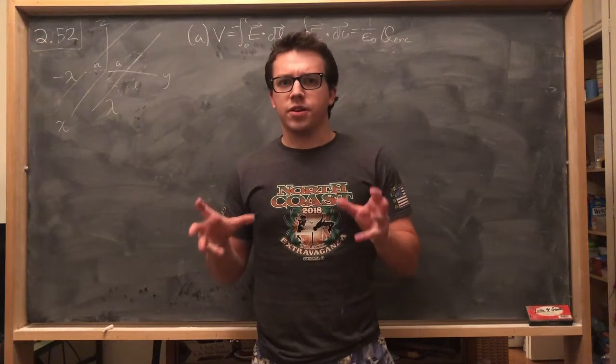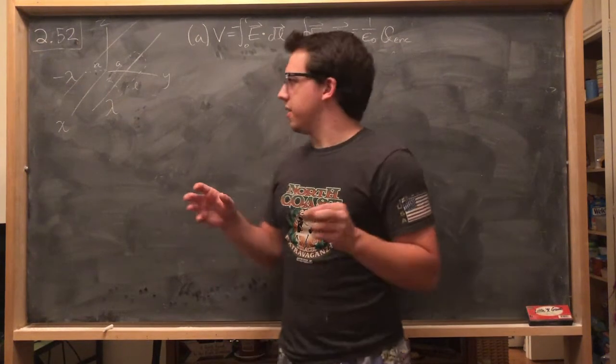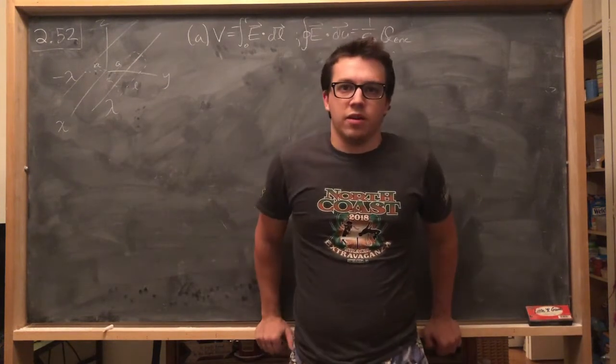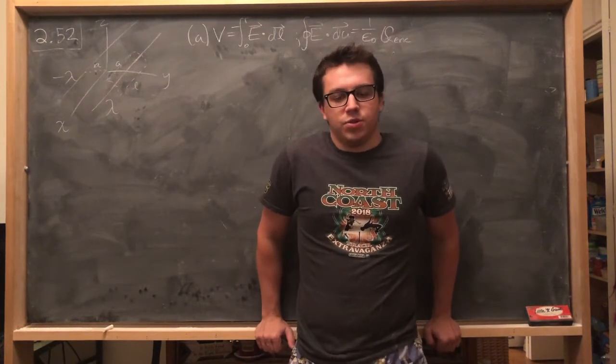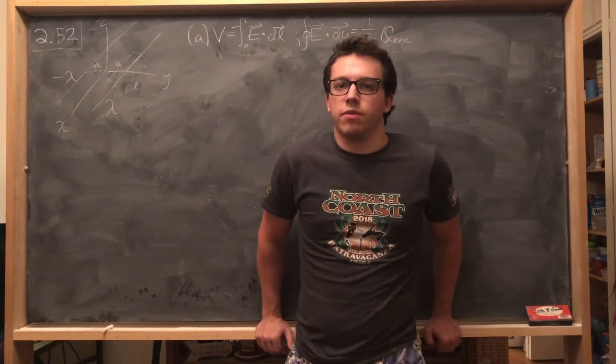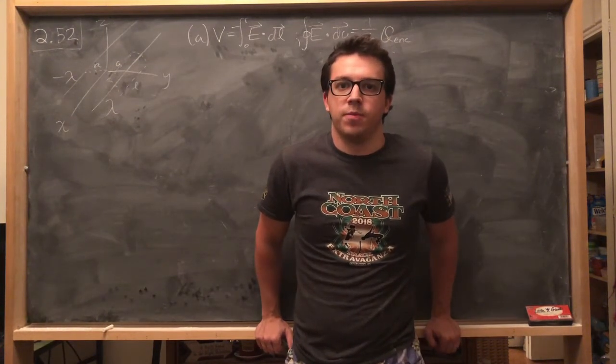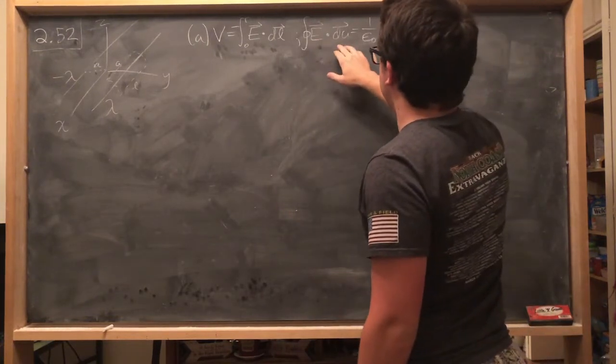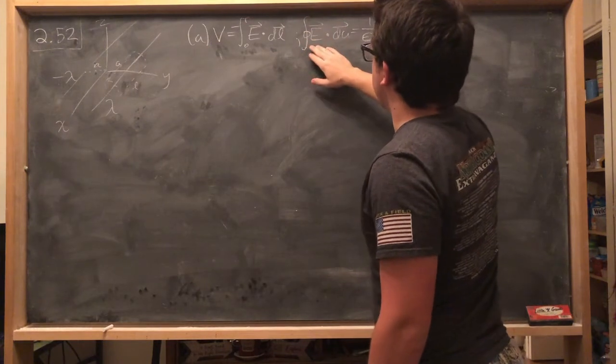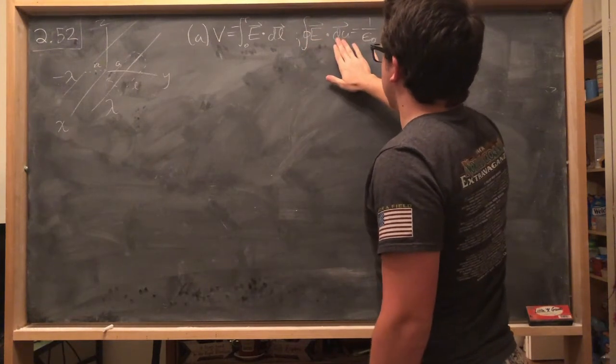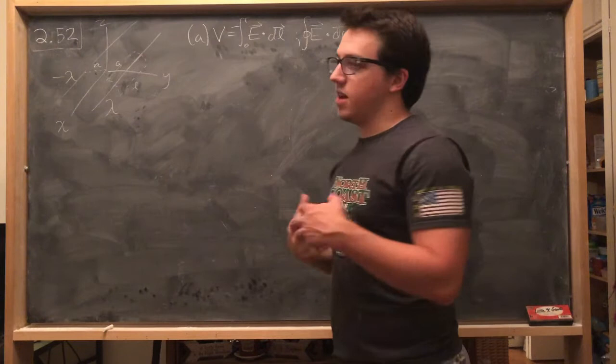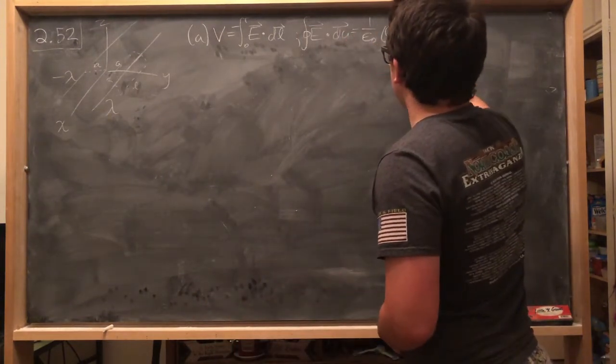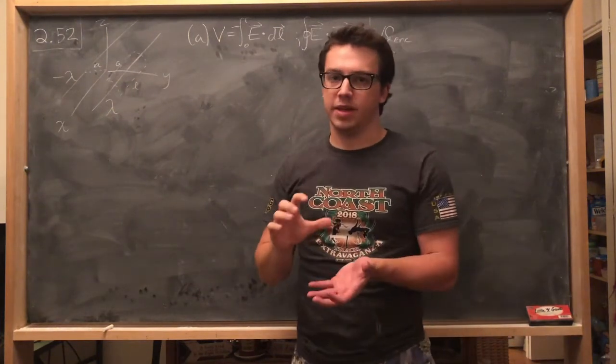And so rather than going at calculating the electric field directly using Coulomb's Law, we're going to invoke Gauss's Law. And hopefully if you're doing a problem in the back of Chapter 2, that means you're already familiar with Gauss's Law by now. But if not, it's this equation that says the electric field dotted with the surface integral of the electric field over some Gaussian surface is equal to one over epsilon naught times the charge enclosed within that surface that you've picked out.